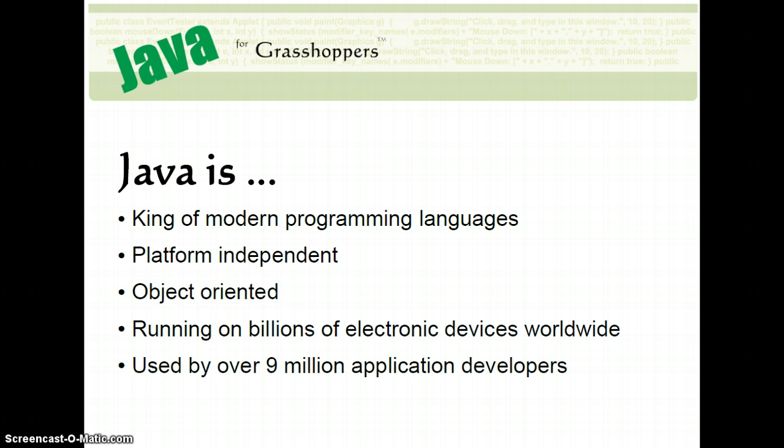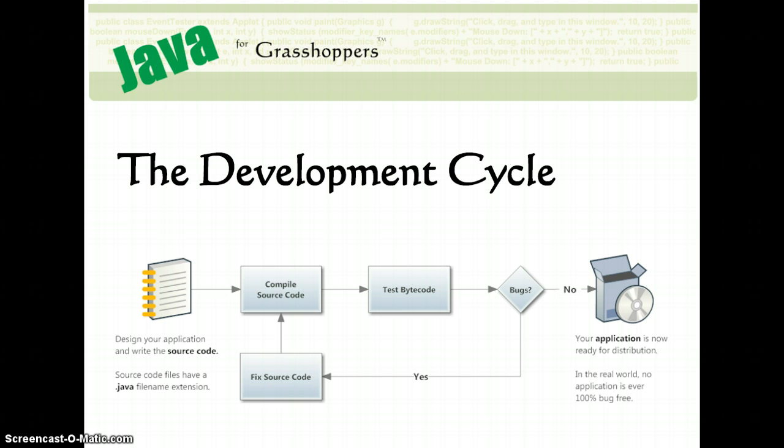So moving on to the next slide here, we've got the development cycle. All right, this is sort of a simplified version of the development cycle, which is the process that you would go through when you're developing a Java application. To begin with here on the left, you need to design your application before you actually begin writing any code. This is very important.